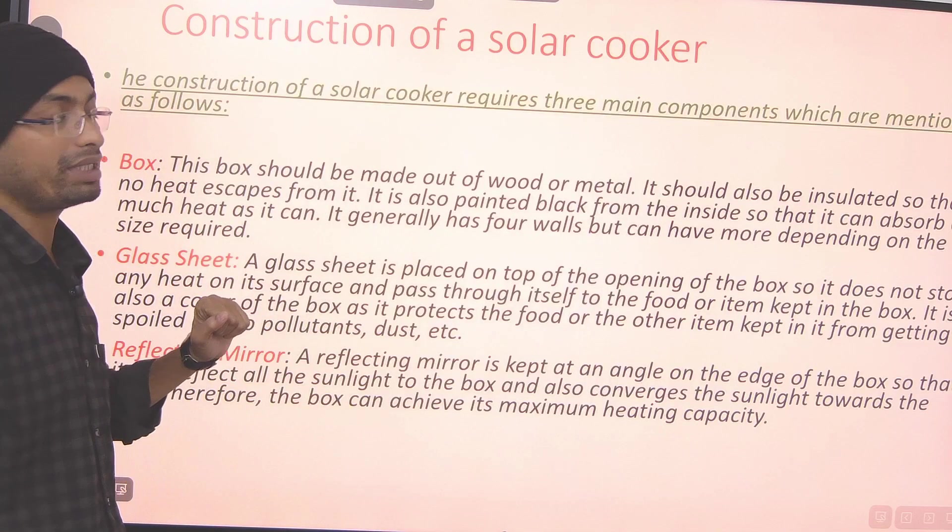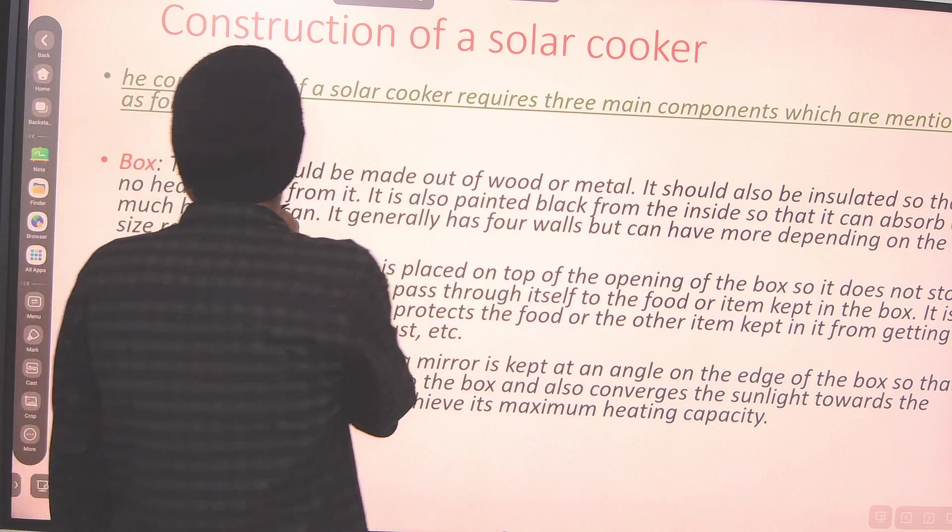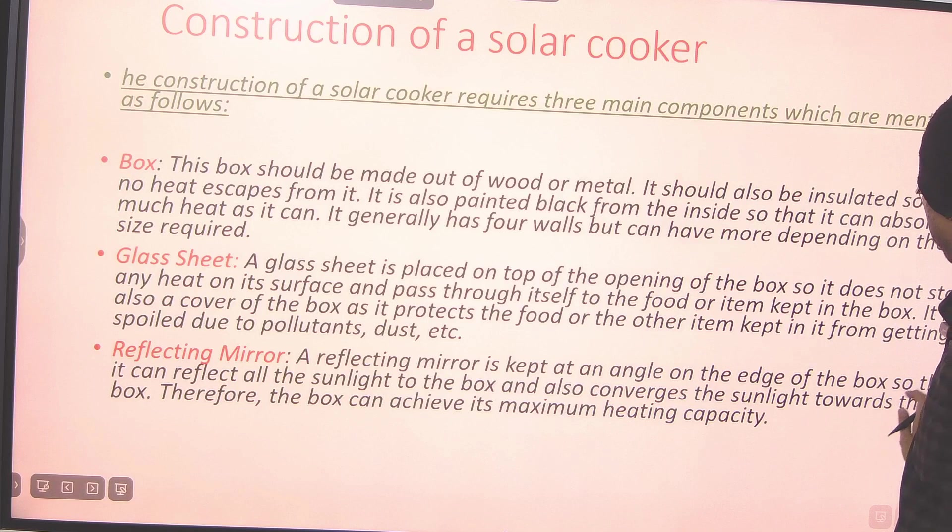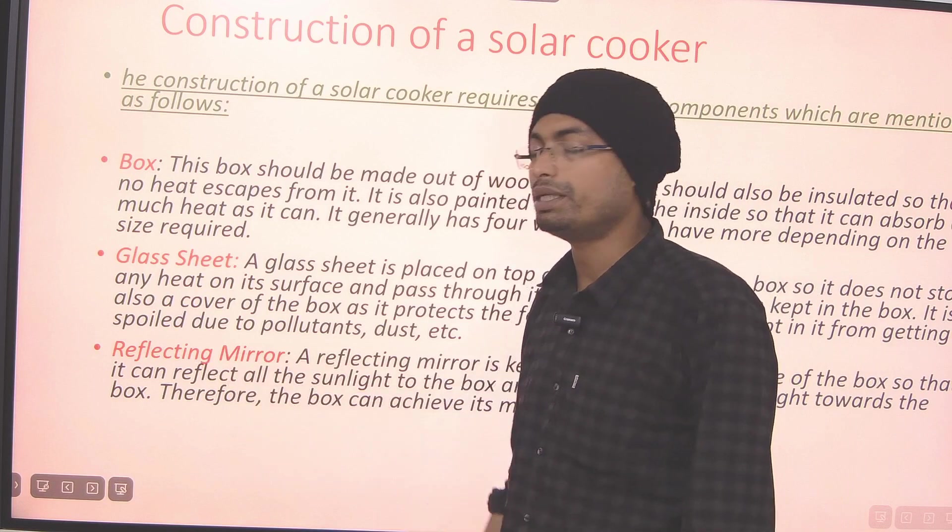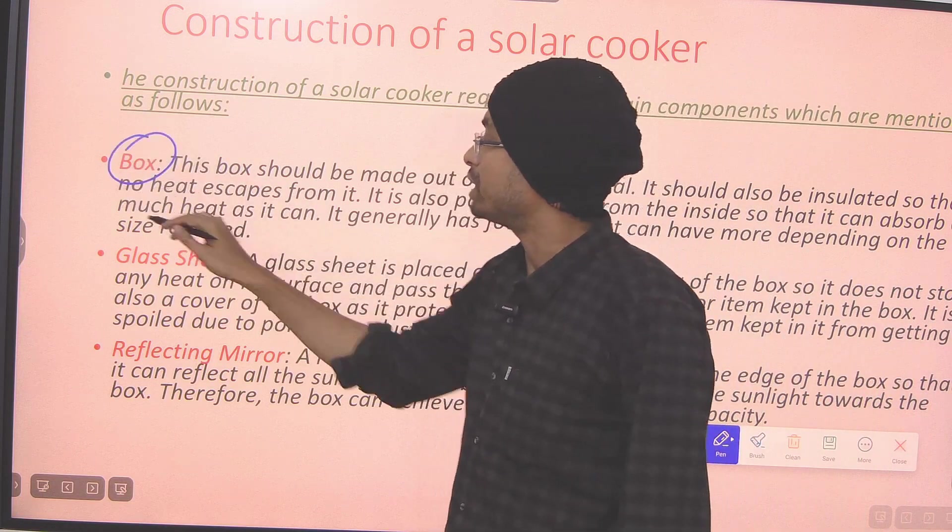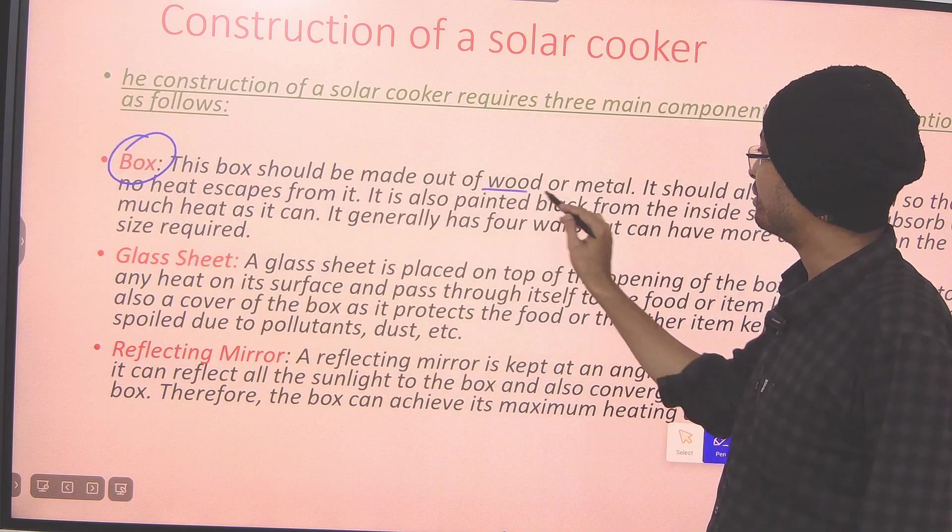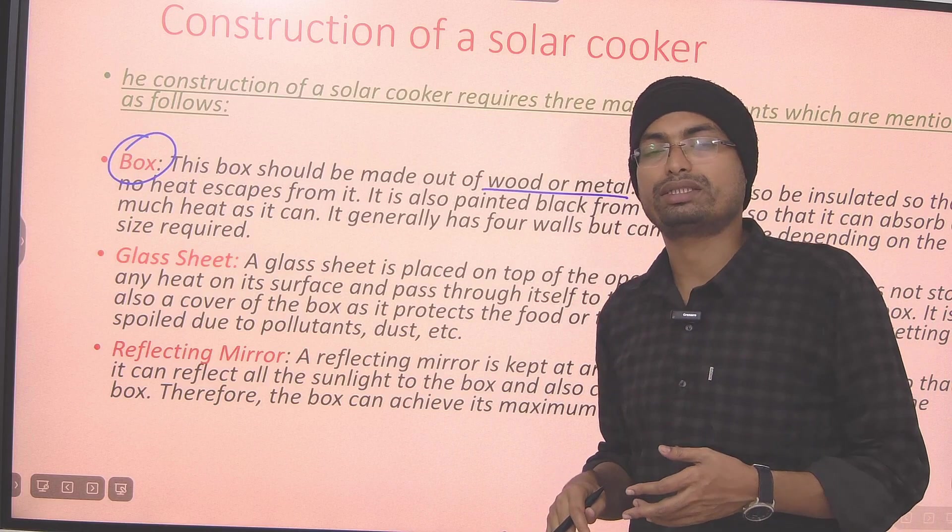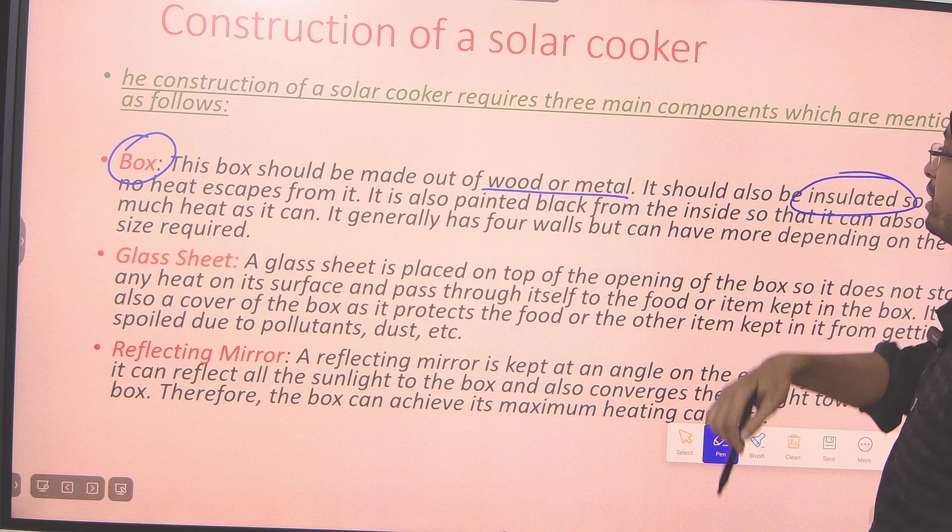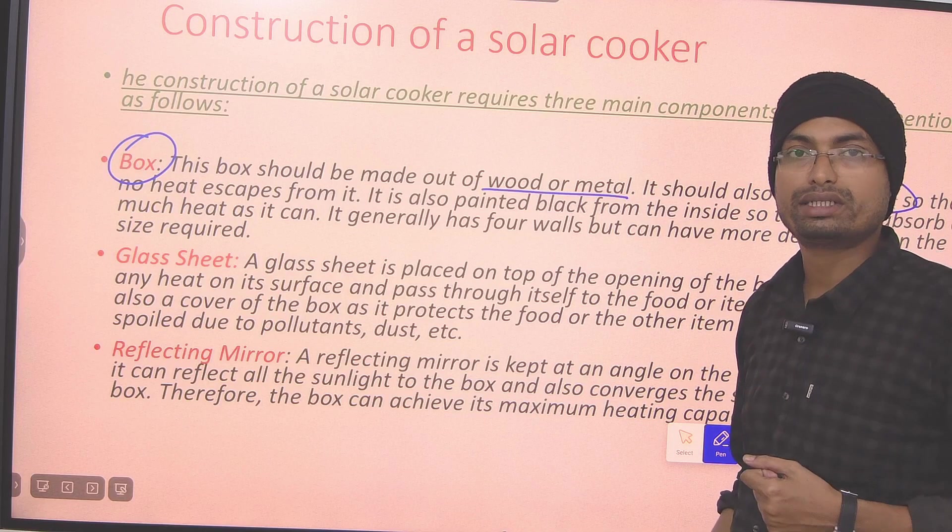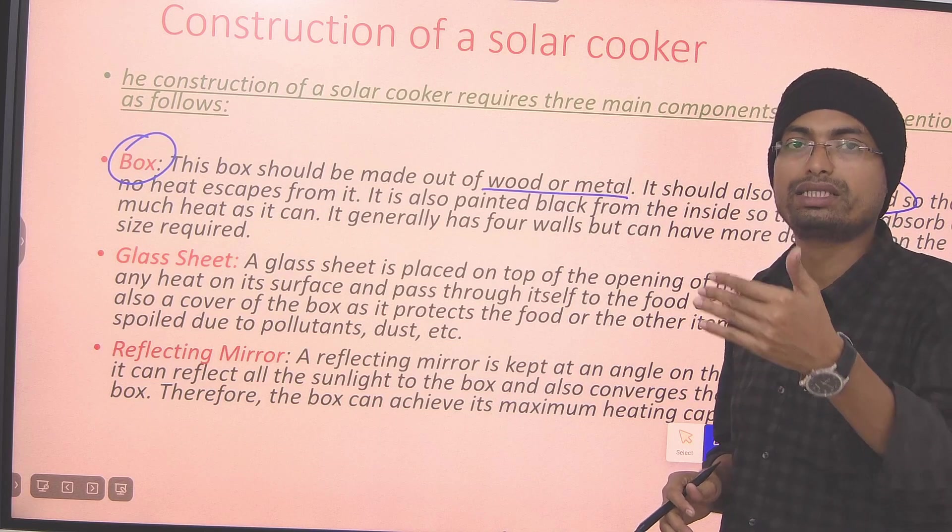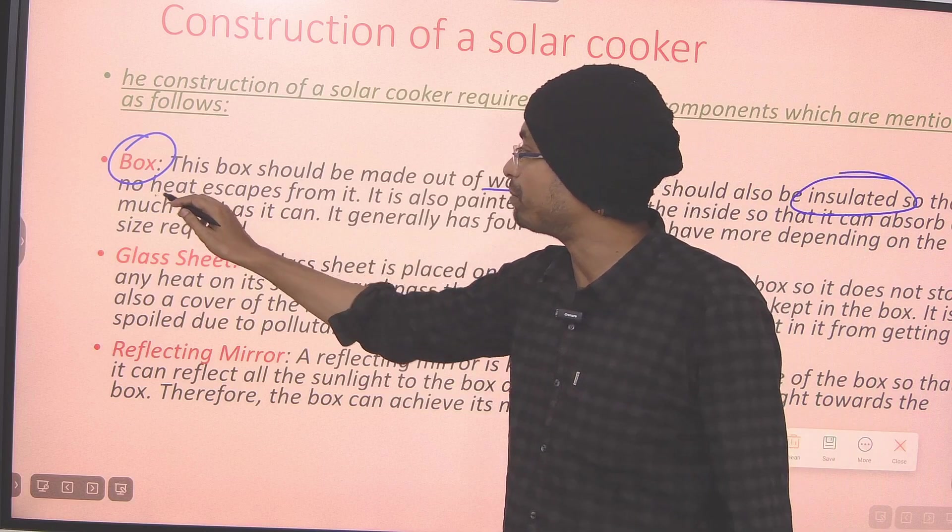Now, we have to detail about this. In the solar cooker, we have three main things. We have a glass sheet, and then we have a reflective mirror. So, first of all, what is the box? The box is made of wood or metal. We can make a wood box, and also a metal box can be made. Now, what about the box? We insulate the box. So, how do we insulate the box? We have seen in this figure that we have a thermocol layer. We put a layer of foam.